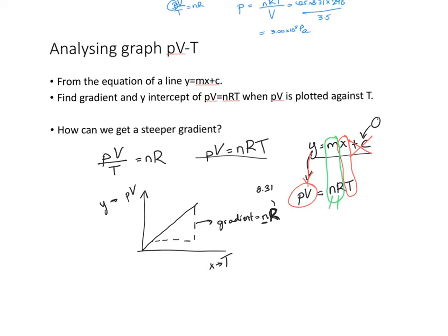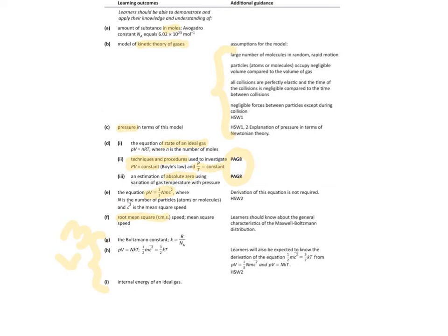So for a quick review: we've looked at the equation of state of an ideal gas, its graphical representation, the techniques and procedures, and how to estimate absolute zero using gas temperature and pressure. Now we'll look at root mean squared speed and mean squared speed, and the characteristics of a Maxwell-Boltzmann distribution. We will also look at the equation PV = ⅓Nm c̄², though you don't need to know how to derive it — I might do an extra video or cover it in class if you want.